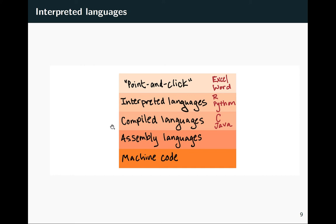The key difference between compiled and interpreted languages is this: with compiled languages you write out your whole program as a batch, compile it, send it to the computer, and the computer runs the whole thing at once. With interpreted languages you can have a conversation with your computer — you might ask it to read in a dataset, it does that, then you ask for a summary, then you pull out a subset, and you keep that back and forth going as you work with the data, rather than putting all your instructions together first as you do with a compiled language.